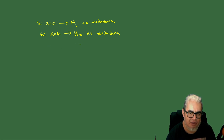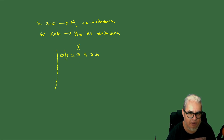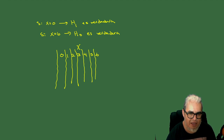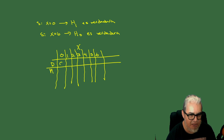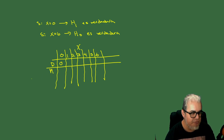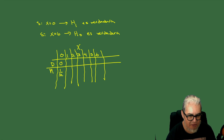Si hacemos una tablita, acá tenemos el resultado del experimento: es cero, uno, dos, tres, cuatro, cinco y seis. Vamos a calcular la probabilidad de que haya sido alguno de los dos experimentos. Si le llamamos D a tirar el dado o M a tirar cinco volados: si salió cero, la probabilidad de que haya sido un dado es cero porque los dados empiezan en el uno. Y la probabilidad de que hayan salido cinco volados sin águila es uno sobre treinta y dos.